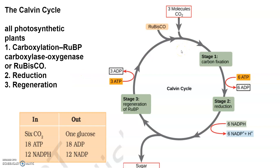Stage one — carboxylation — is the fixation of carbon dioxide into three-phosphoglyceric acid, or 3-PGA. This occurs in the presence of the enzyme RuBisCO, that is ribulose bisphosphate carboxylase, which results in the formation of two molecules of 3-PGA.